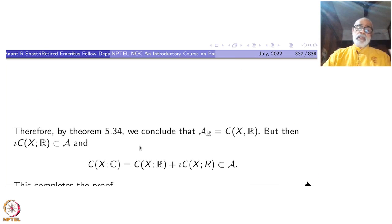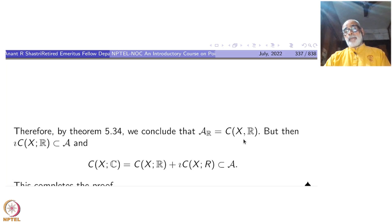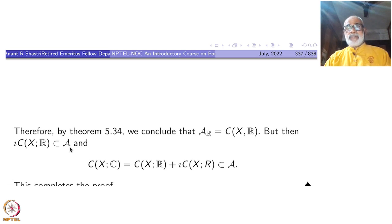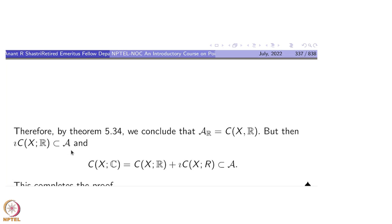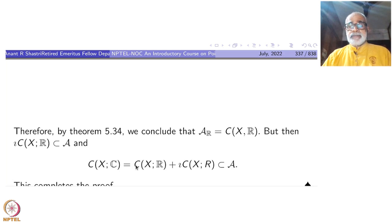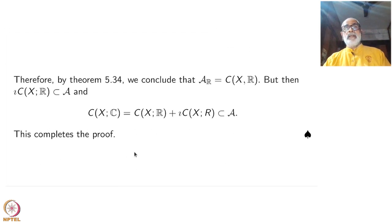Therefore, by the real Stone-Weierstrass theorem, we conclude that A_r must equal the whole of C(X,R). But then i times C(X,R) will also be inside A, because A_r is inside A and A is a complex vector space. Therefore C(X,C) = C(X,R) + i·C(X,R), and both are inside A. So A equals C(X,C). That is the end of the proof for the complex case.